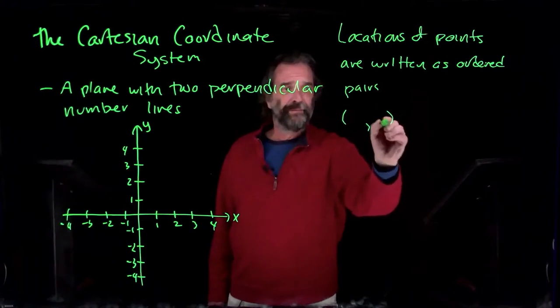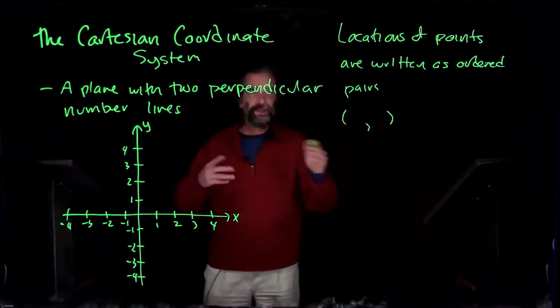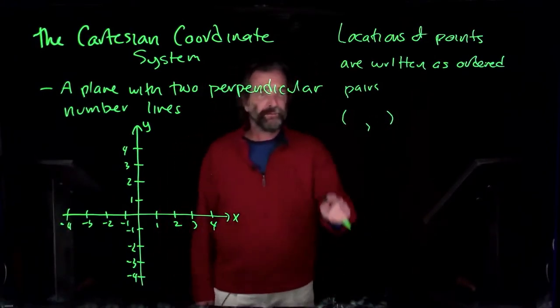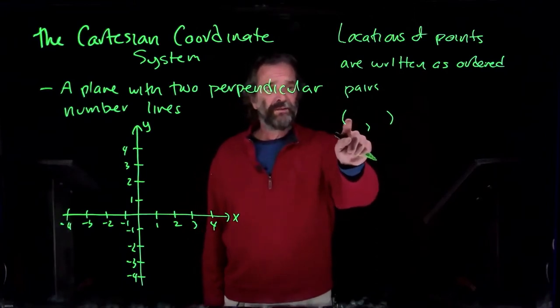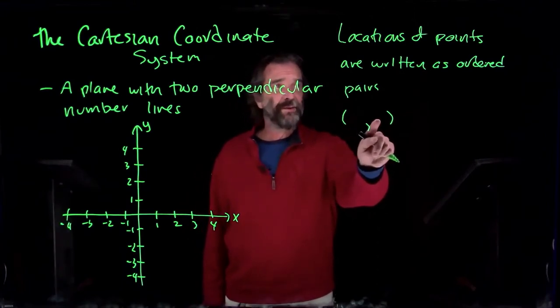We use special notation: parentheses and a comma. These parentheses mean there's a first coordinate that goes here and a second coordinate that goes there. Let's make an ordered pair.